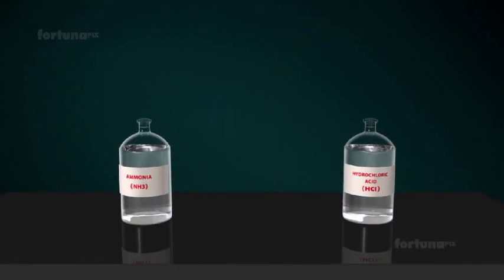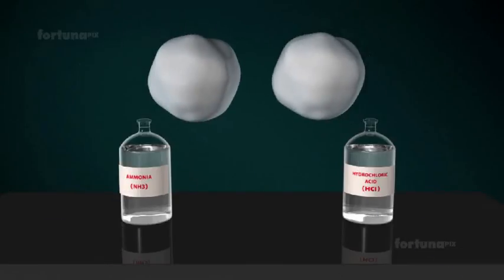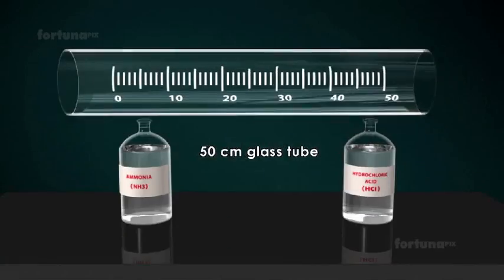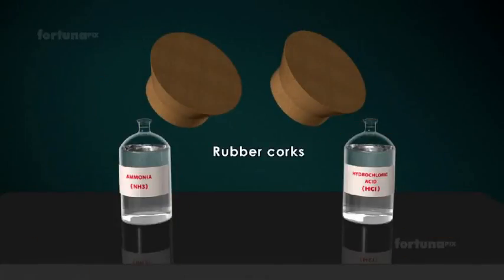To study the diffusion pattern of two different gases, let's perform a simple experiment. We require Ammonia and HCl solutions, two small cotton balls, 50cm glass tube open at both ends, and two rubber corks.